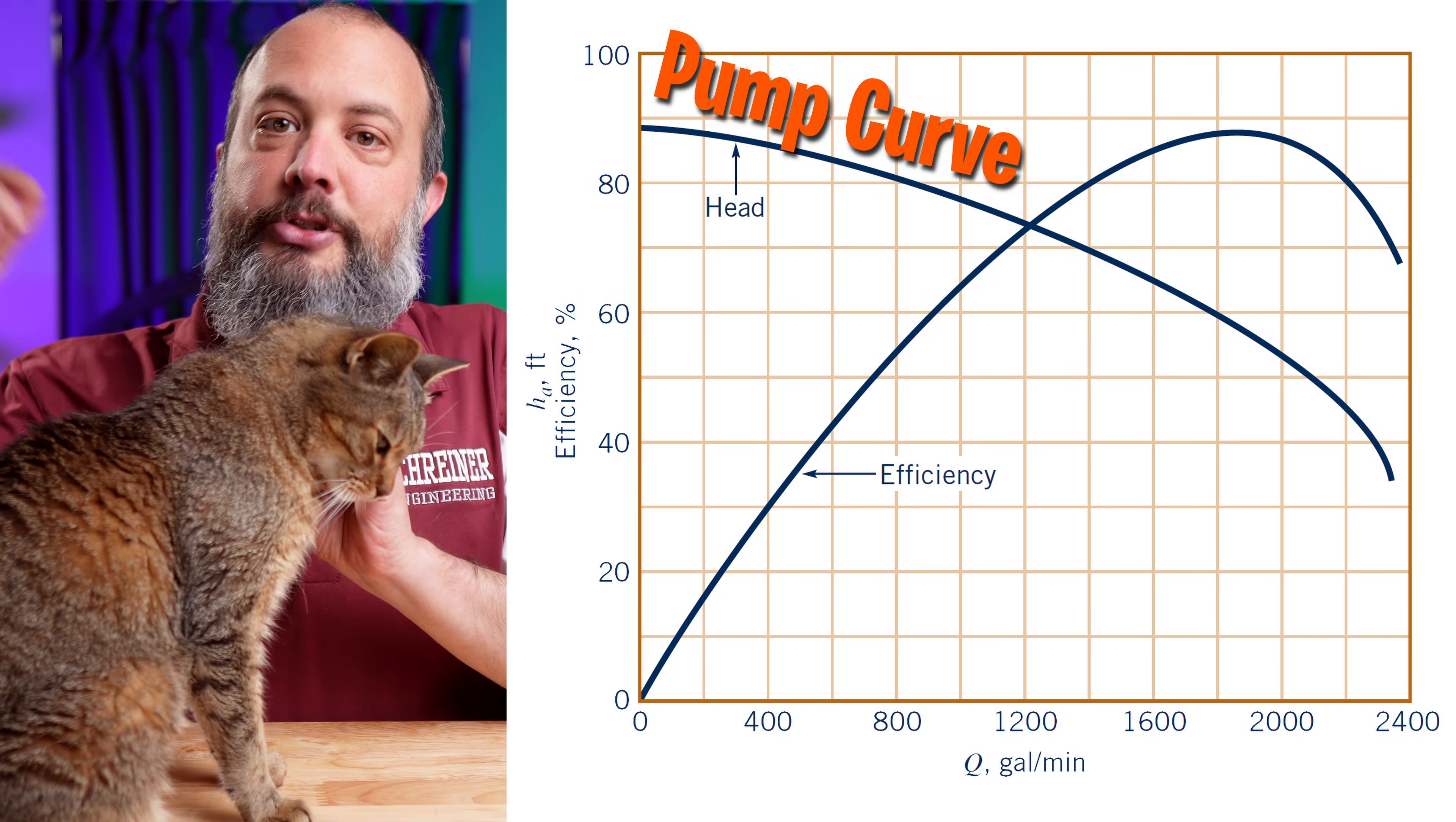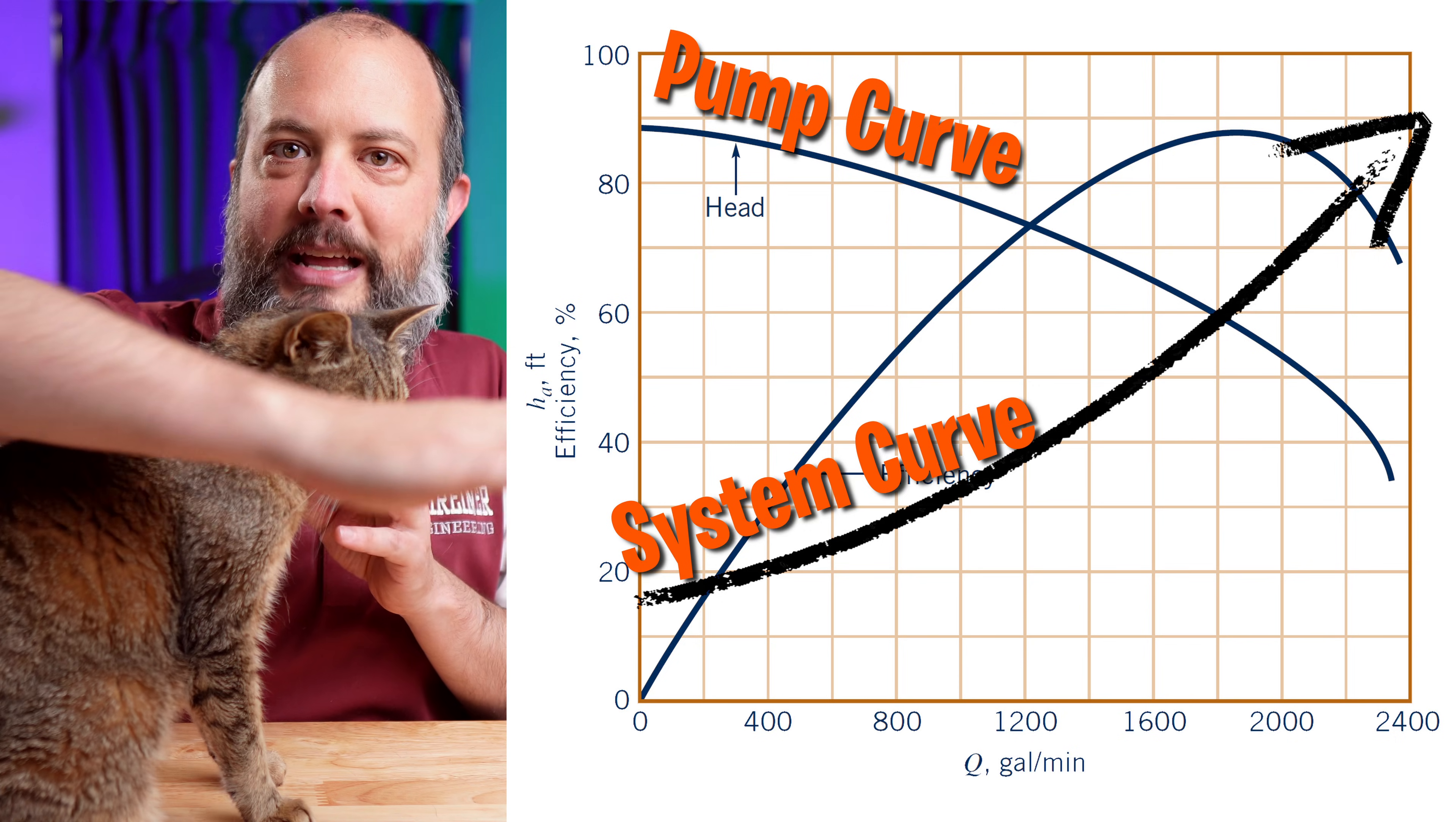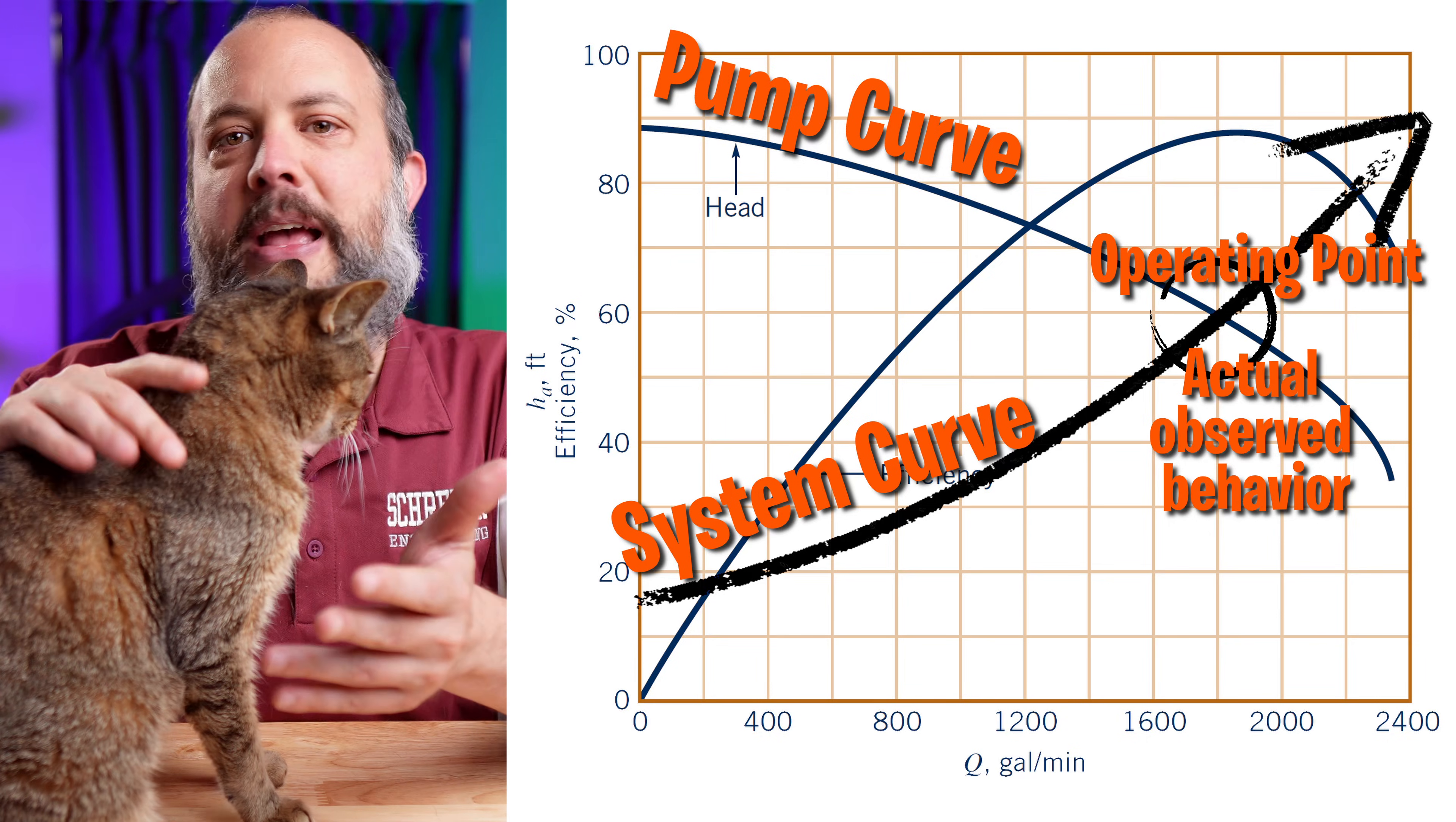So while a pump curve will start off high and then decrease, as more flow, less pressure, a system curve will start off low and increase. That is, as flow rate increases, the head loss increases. And so wherever those two curves meet, that is what your final actual system behavior will be.